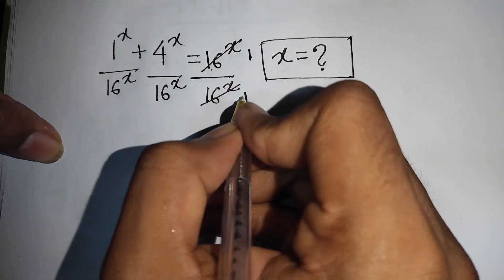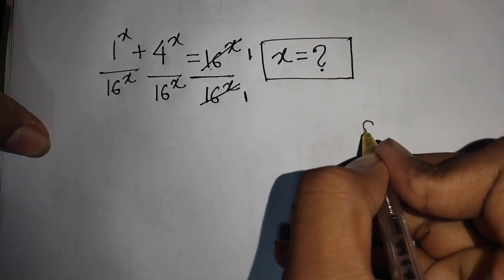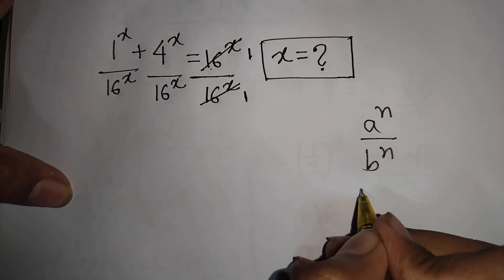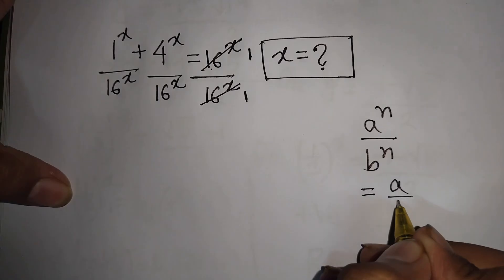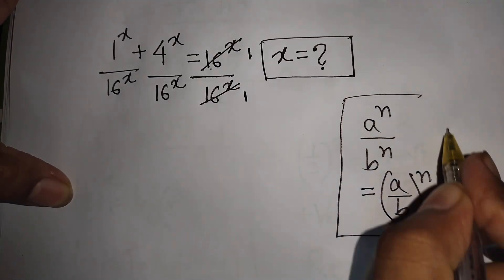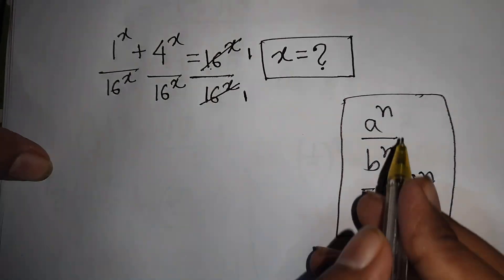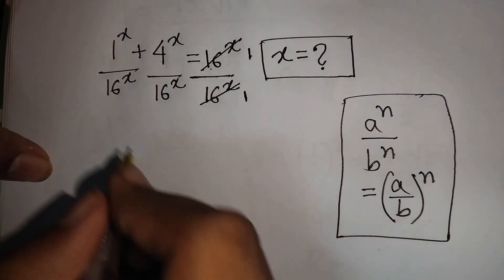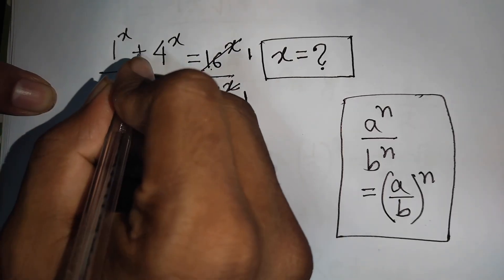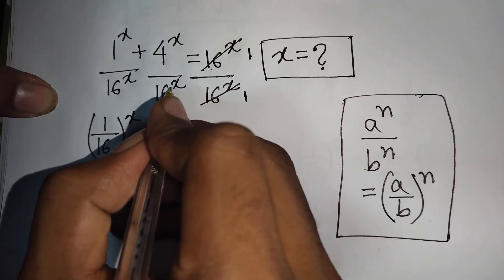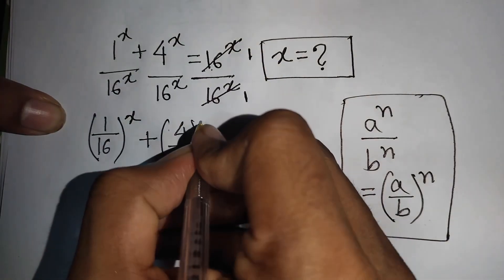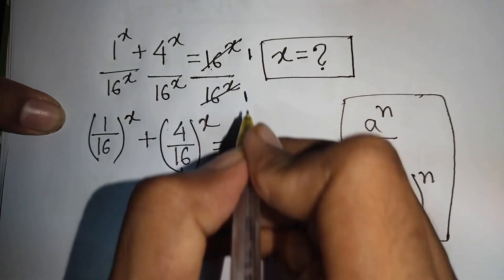Here we apply the exponential rule: a^n divided by b^n is equal to (a/b)^n. Since we have the same power x but different bases, we can write (1/16)^x plus (4/16)^x, which equals 1 over 1, that means 1.